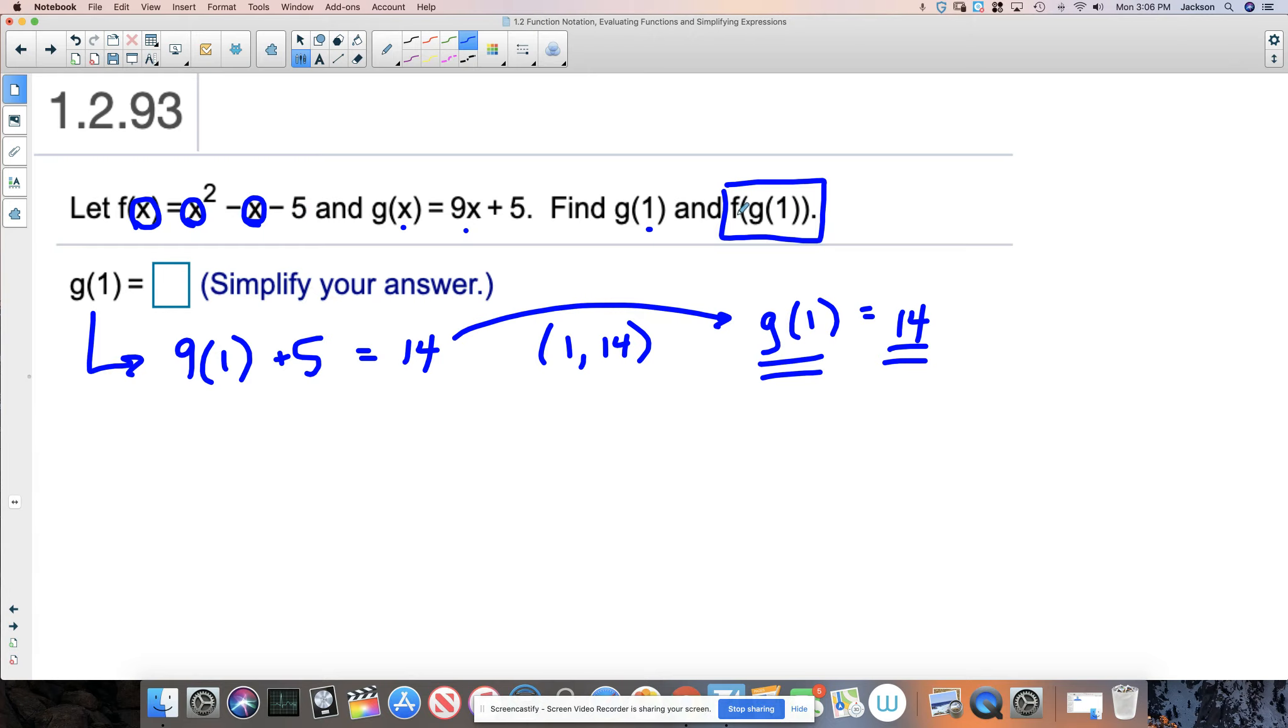So what are we plugging into f when they want to know f of g of 1? And they write it like this. We're supposed to take g of 1 and make it the input into f. That's why I went through this and said g of 1 is equal to 14. This is an equivalent statement. And when two things are equal, I can put one in place of the other.